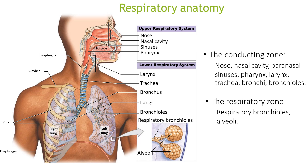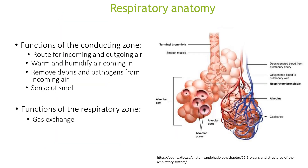There are two types of zones: the conducting zone and the respiratory zone. In the respiratory zone, you have respiratory bronchioles and alveoli. In the conducting zone, you have the nose, nasal cavity, paranasal sinuses, pharynx, larynx, trachea, bronchi, and bronchioles. Functionally, the conducting zone provides a route for incoming and outgoing air, warms and humidifies incoming air, removes debris and pathogens, and provides a sense of smell. The respiratory zone is primarily responsible for gas exchange.